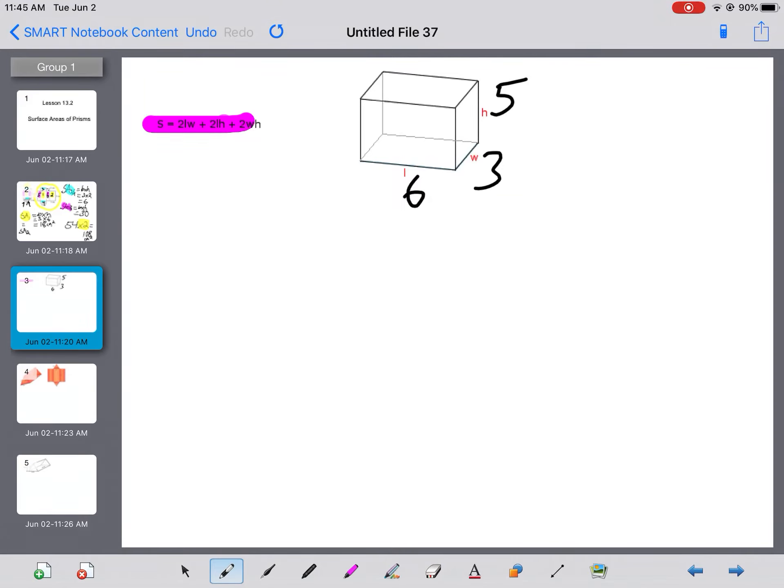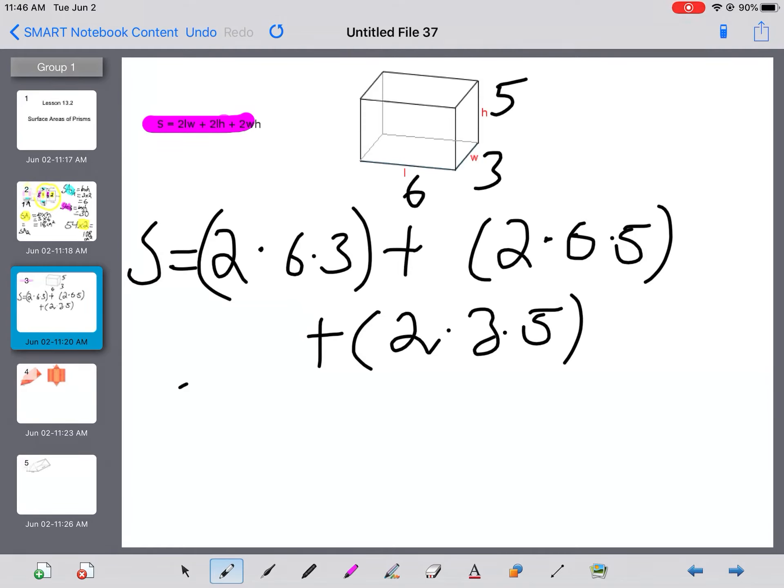I can solve it using this formula. Two times the length times the width, which would be two times six times three, plus the length times the height, two times six times five, plus the width times the height, two times three times five. So if I do all of those together, I get two times six is 12, and 12 times three is 36 plus two times six times five, which is 60 plus two times three times five, which is 30. And then I add those all together and I get 126.